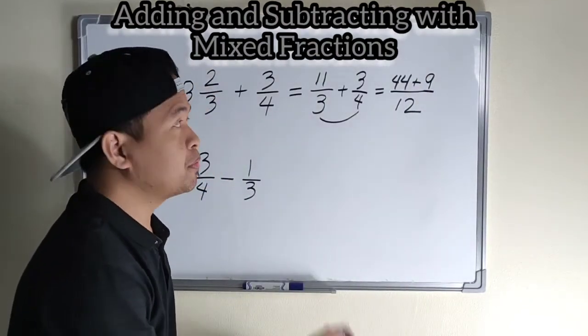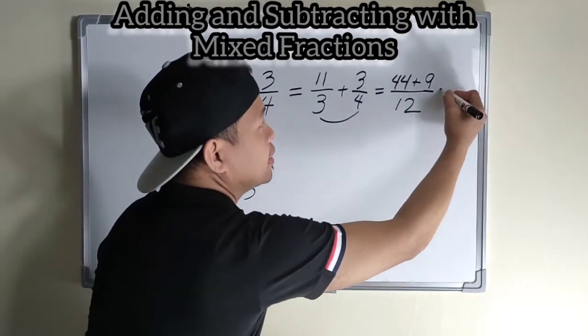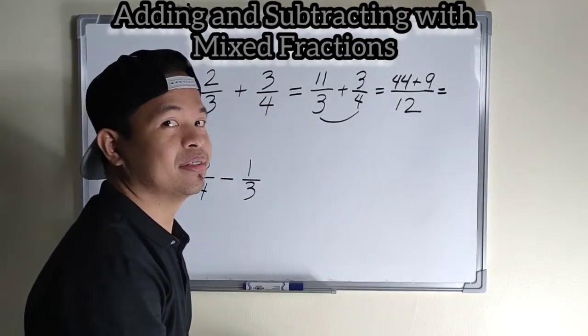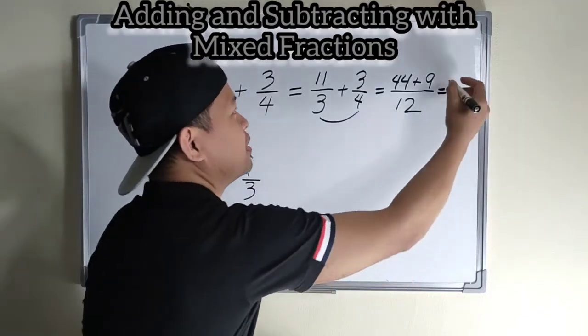Then, forty-four plus nine is equal to, ilan mga bata? Tama. Fifty-three.